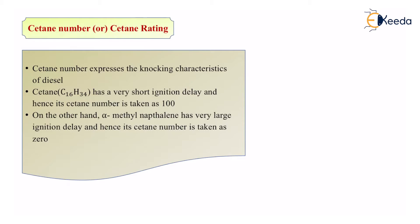On the other hand, we have alpha-methyl naphthalene. It is an aromatic compound wherein there are two benzene rings attached to each other and on the second carbon of the benzene ring, there is a methyl group attached to it. That particular compound has a very large ignition delay and hence the cetane number is taken as zero.